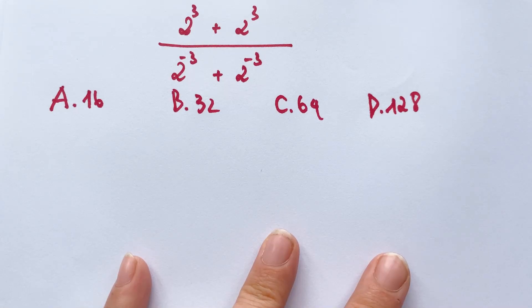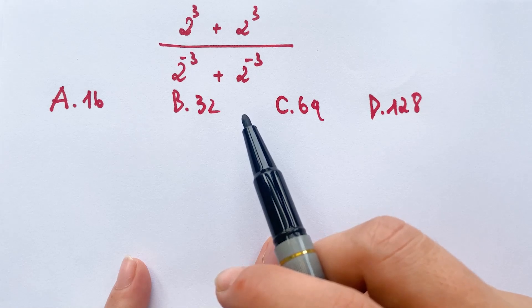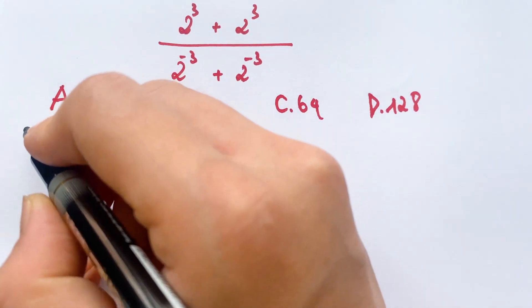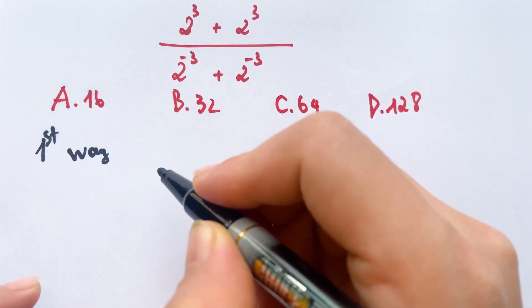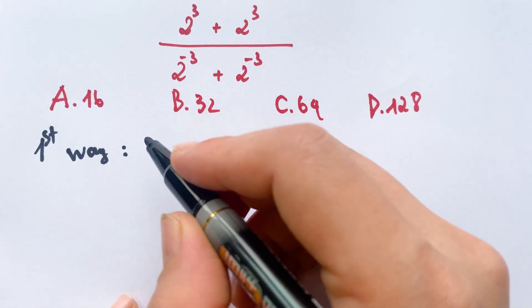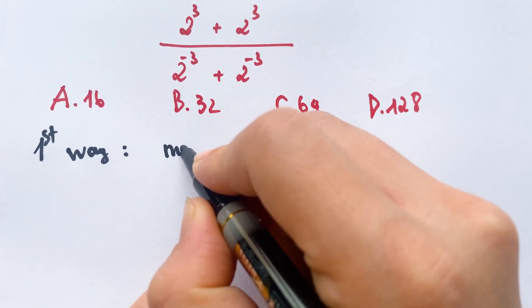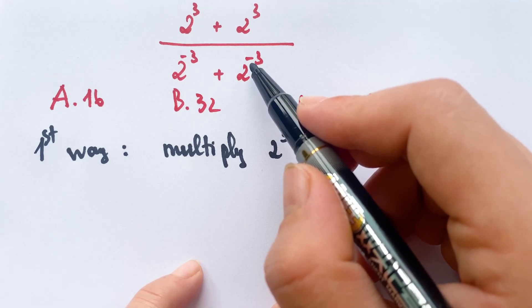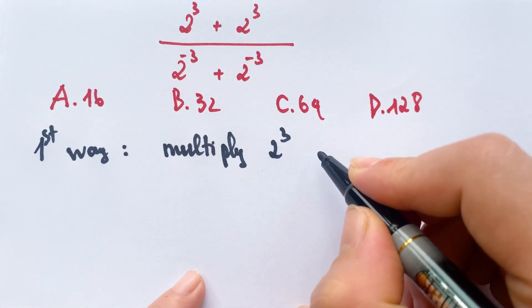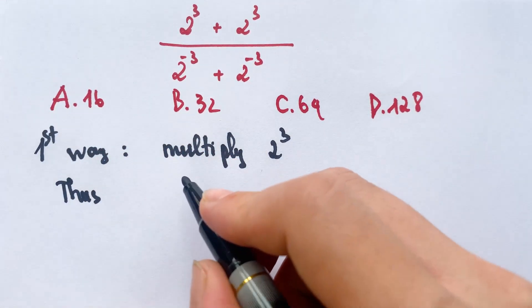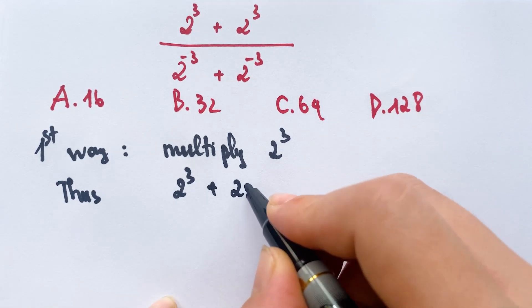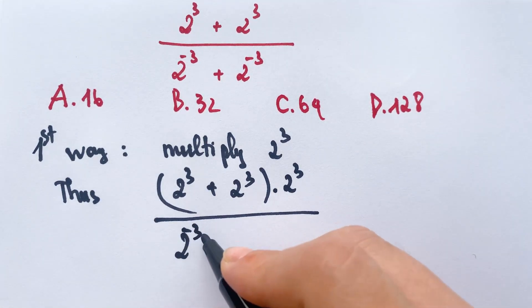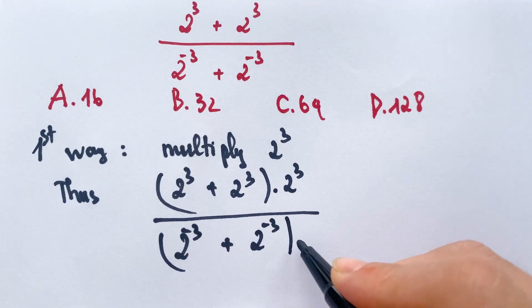Hello everyone. How to simplify the expression? We have four answers: A, B, C, and D. For the first method, we can multiply both the numerator and denominator of the expression by two cubed. Therefore we have two cubed plus two cubed times two cubed, over two to the minus three plus two to the minus three times two cubed.